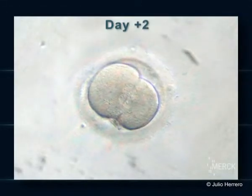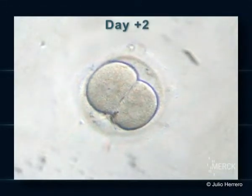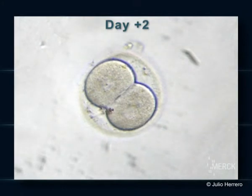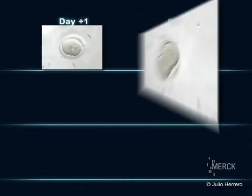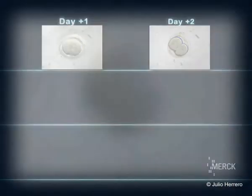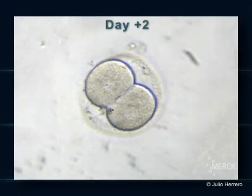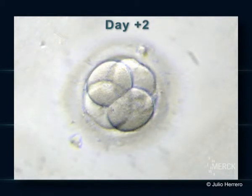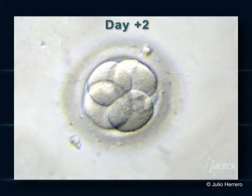Two days after puncture, the embryo divides itself and contains two cells with one nucleus per cell, which in turn starts to divide into an embryo of four cells if its development is optimal.